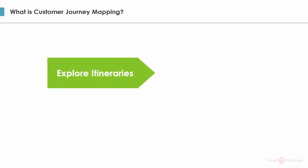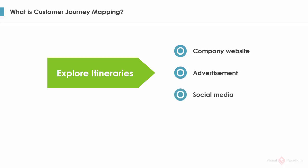Here are the touch points of the stage 'explore itineraries.' Company website: a potential customer comes to our website to find information about tours. Advertisement: a potential customer knows our offer from advertisements. Social media: a potential customer comes to our social media accounts and sees our offers there. Sometimes touch points are written as customer actions, like surfing the company website and reading advertisements.